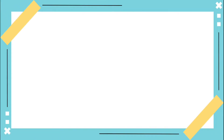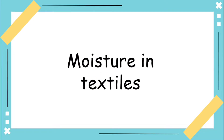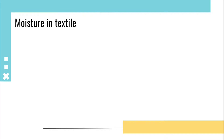Hello guys, welcome to TIPS, our platform for textile problems and solutions. Now we are going to learn about moisture in textiles. Moisture in textile is the atmospheric condition and the relative humidity. Humidity is nothing but the dampness of atmosphere.